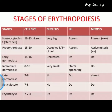There are some changes as colony forming units pass through stages to form RBC: decrease in size, disappearance of nucleus, and appearance of hemoglobin. At the stem cell stage, size is very large at 19 to 23 microns, with a big nucleus, no hemoglobin, and mitosis occurs. In the proerythroblast, cell size reduces to 15 to 20 microns, the nucleus occupies three-quarters of the cell, and hemoglobin is absent.